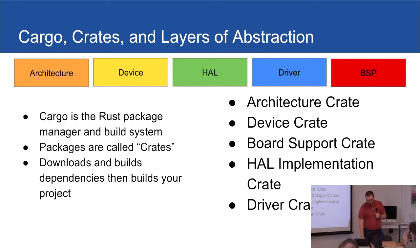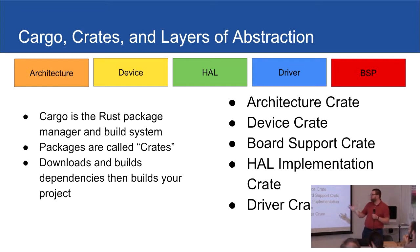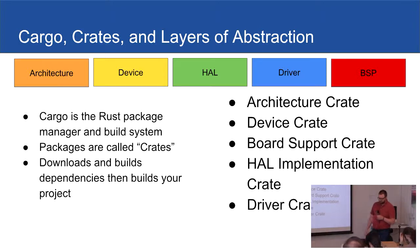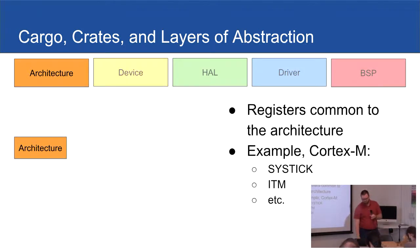So we've got our tooling set up. Before we jump into the code, let's take a few minutes to talk about the ecosystem. Rust has a package manager and build tool called Cargo. It installs packages called crates, and it just works — it's very similar to NPM or Yarn if you've done stuff with Node.js. It downloads and builds dependencies along with your project. The community is settling on dividing functionality into different layers of abstraction. First, we've got our architecture crate.